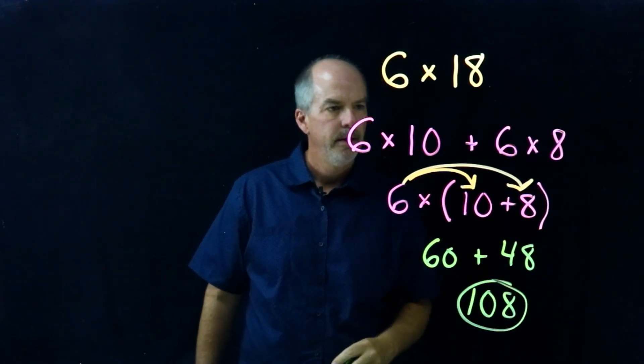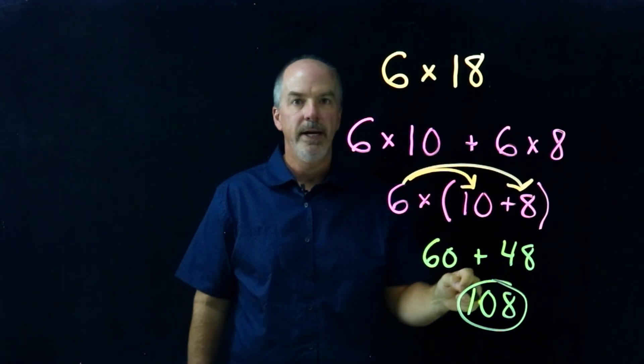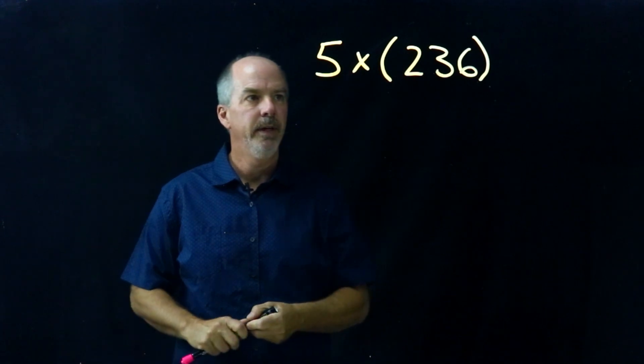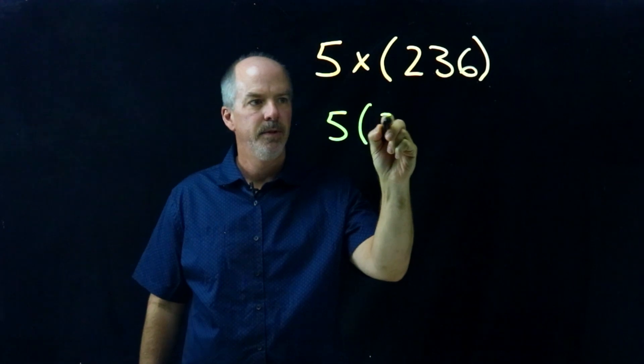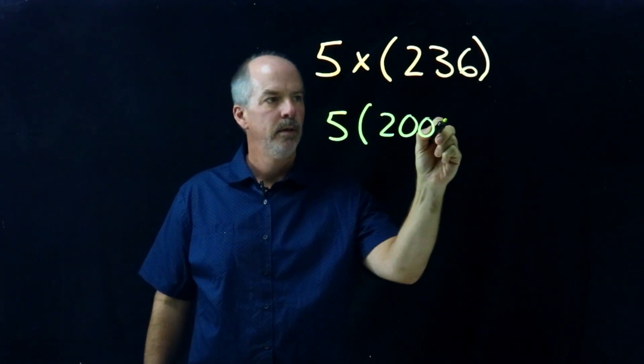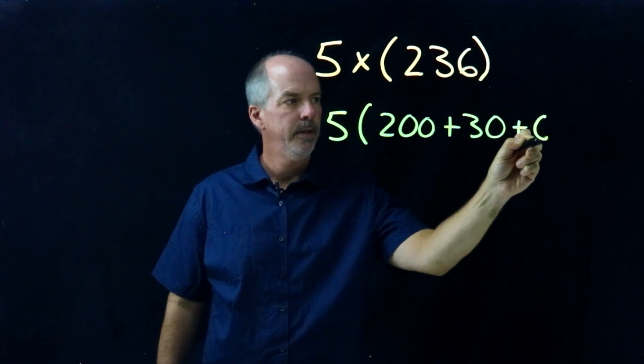So we used the Distributive Property to solve and we showed our work on how we did it. On this one then, we can rewrite it as five, and I don't have to write the x, times two hundred plus thirty plus six.